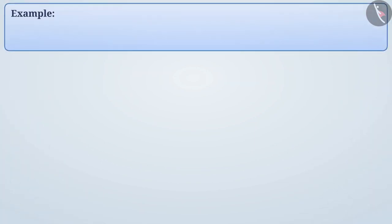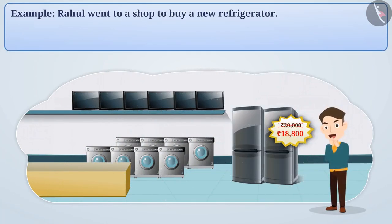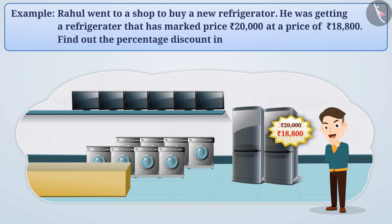Rahul went to a shop to buy a new refrigerator. He was getting a refrigerator that has a marked price of 20,000 rupees at the price of 18,800 rupees. Find out the percentage discount in this situation.